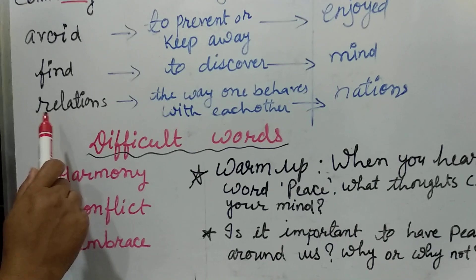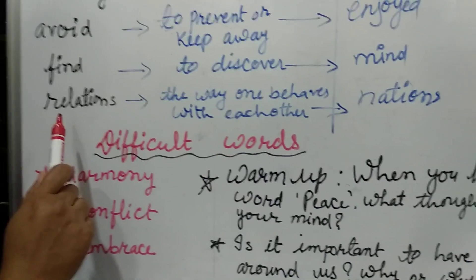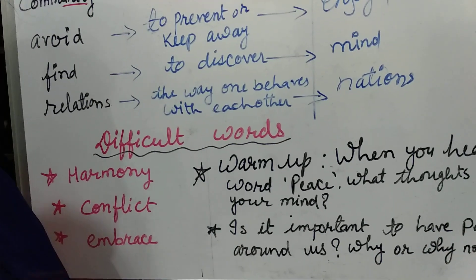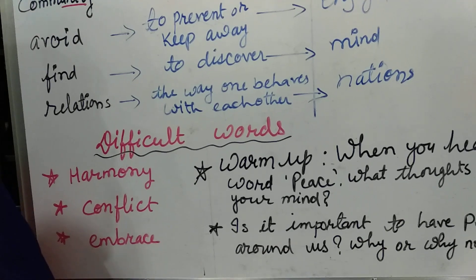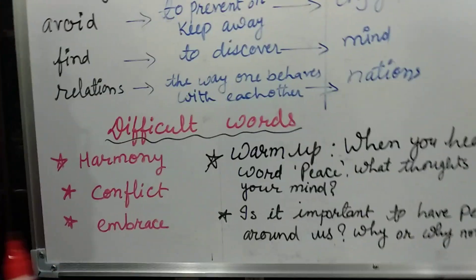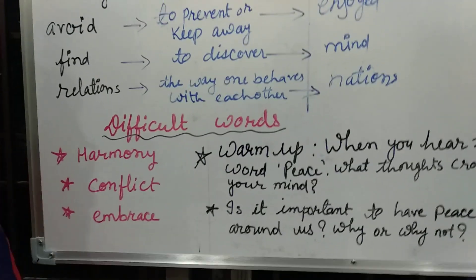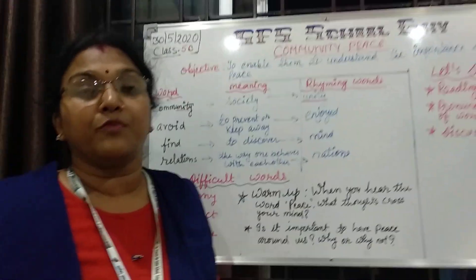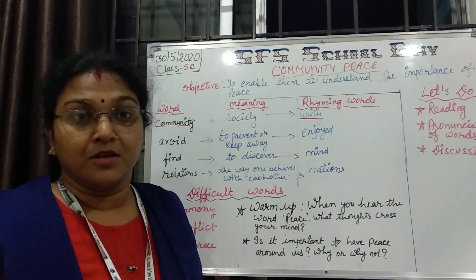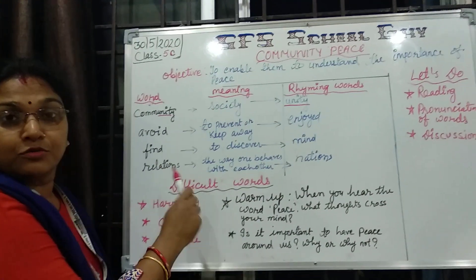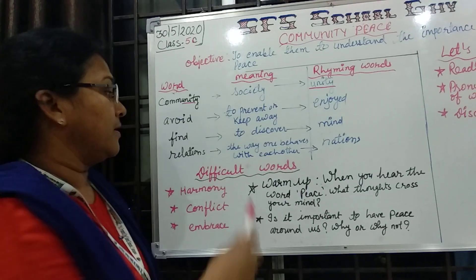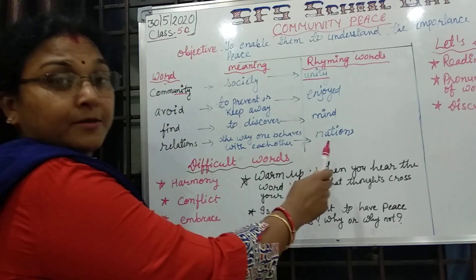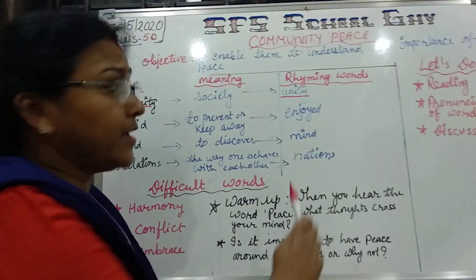The last word is relations. Relations means the way we behave with each other — it can be among two people, it can be among two countries. Like we talk about our relations with America, or our relationship with our friends. So it is something related to the way we behave with one another. And the rhyming word for the word relation is nations.